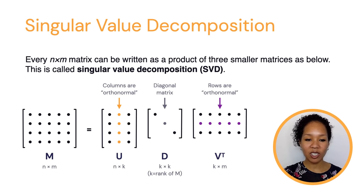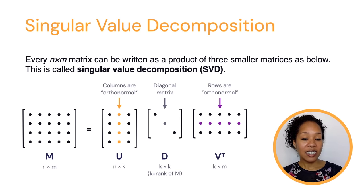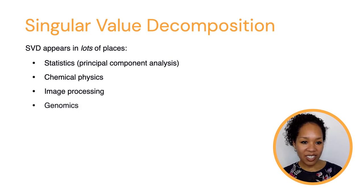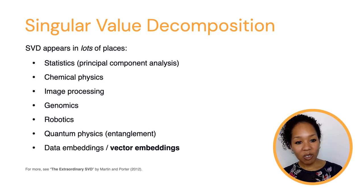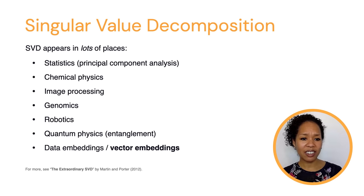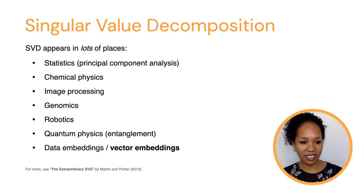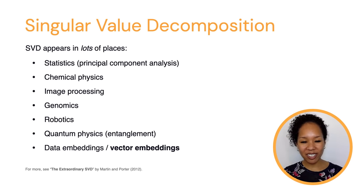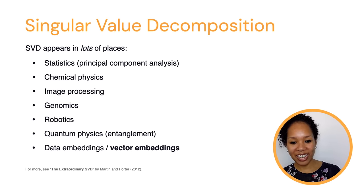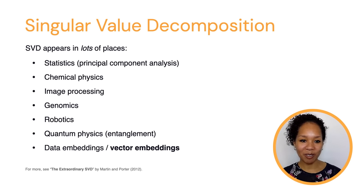Just know that any matrix can be written as a product of three smaller, really nice matrices, and this has a nice geometric picture if you like visual ways of thinking. Singular value decomposition, or SVD, appears all throughout the scientific landscape — not only is it a fundamental result of linear algebra, it appears in statistics, physics, genomics, robotics, and lots of places. I can't resist sharing this wonderful paper, 'The Extraordinary SVD' by Martin and Porter in 2012 — do take a look.